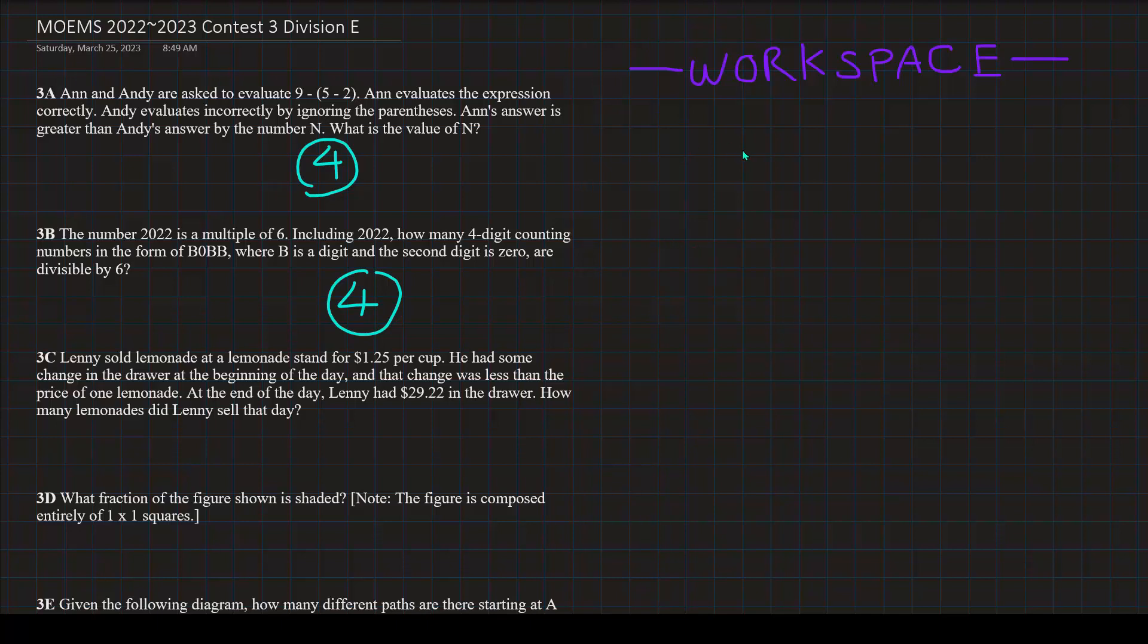So, we know that the equation is 1.25 per cup, let's say C is the amount of cups, plus a certain amount of change, let's call that X, is equal to $29.22. And X is less than $1.25, which is the price of one cup of lemonade. So, this is the information that we can write into mathematical equations or inequalities in order to help us solve this problem. Now, this may be how a middle schooler might solve this if you have already touched into algebra. But, what if you're still in elementary school?